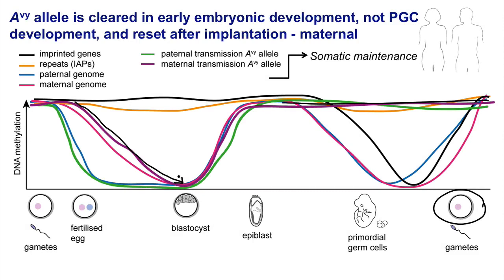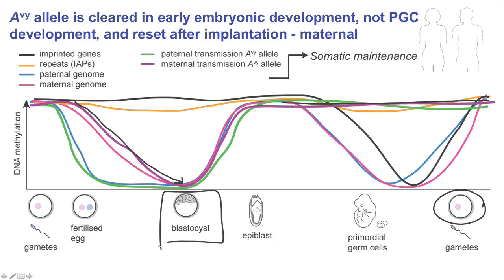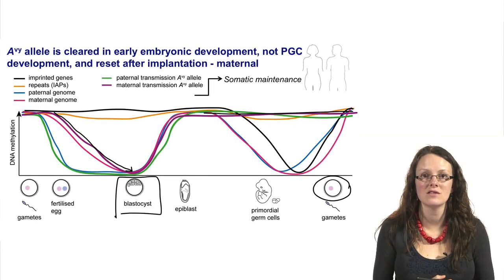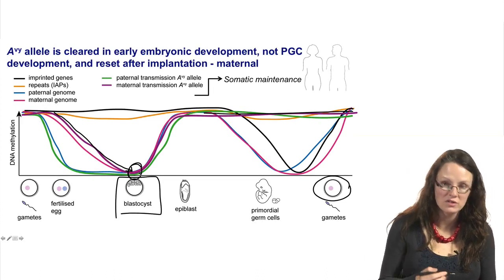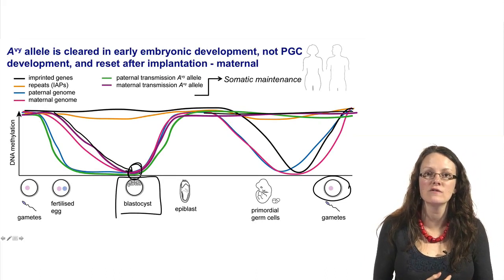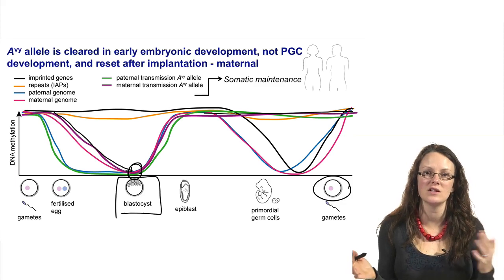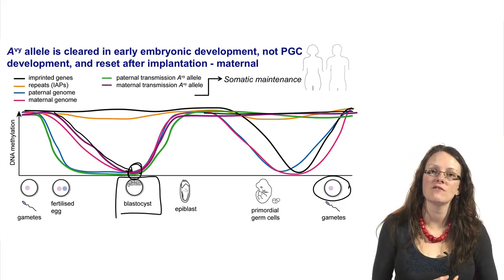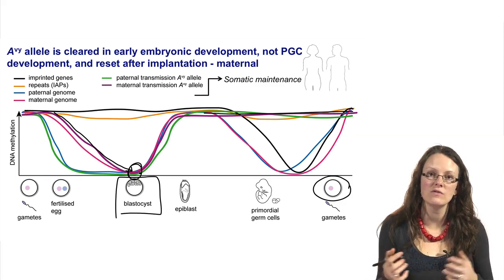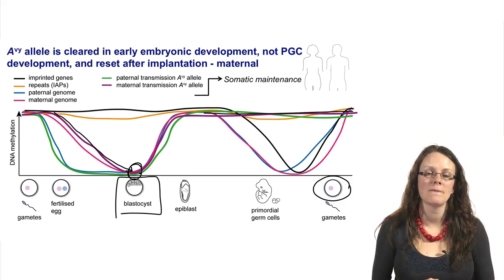The important thing when considering whether DNA methylation may be the epigenetic mark that persists between generations for the AVY allele is that blastocysts from yellow or pseudo-agouti mothers both have essentially no methylation. In other words, we have reached a resetting point — a global nadir in DNA methylation — and there's no detectable difference between blastocysts from each of these females, despite the fact that those females will go on to have quite different spectra of phenotypes in their offspring.